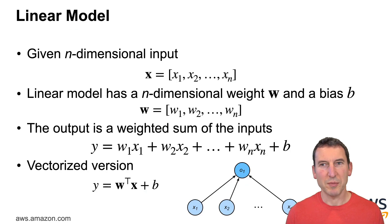In a little bit more math, given an n-dimensional input x is x1 through xn, the linear model has an n-dimensional weight w with coefficients w1 through wn and some bias. Then the output is a weighted sum of the inputs, so y equals w1 times x1 plus w2 times x2 all the way up to wn xn plus some constant b. Since we're mathematicians and thus lazy, we're going to use more compact notation namely w transposed x plus b.